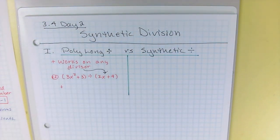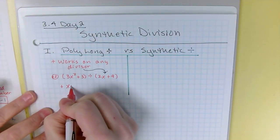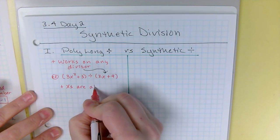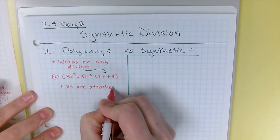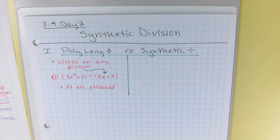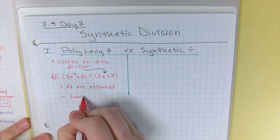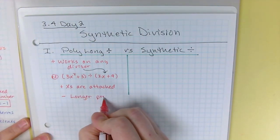So it's very flexible when it comes to polynomials. Another plus for poly long is that the x's are attached. When you are done, your answer is there. The x's are there. They're all attached on the numbers. There's no guesswork. Of course, the downside to polynomial long division is it tends to be a longer process.